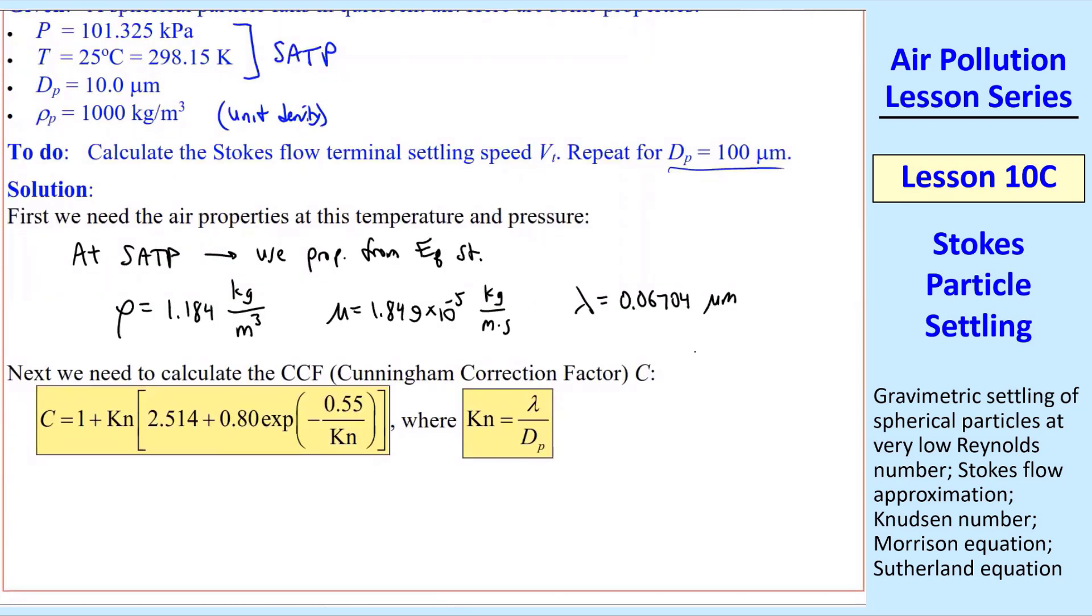Then we calculate the Cunningham correction factor C. To do that, we first calculate Knudsen number using our lambda divided by our DP, both in microns, so this is non-dimensional.